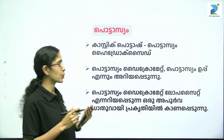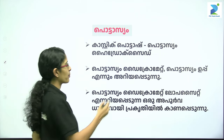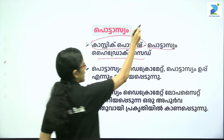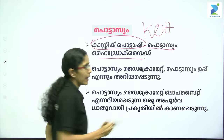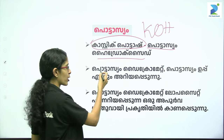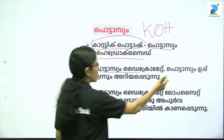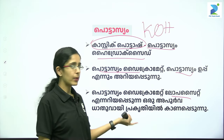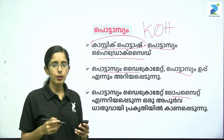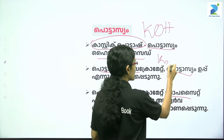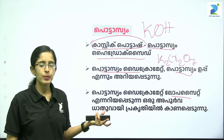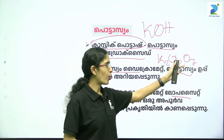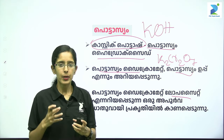Let's start with potassium compounds. Potassium hydroxide — what is it? It is KOH. The chemical formula of potassium dichromate is K2Cr2O7. Potassium, chromium, and oxygen — these three elements are combined in potassium dichromate.